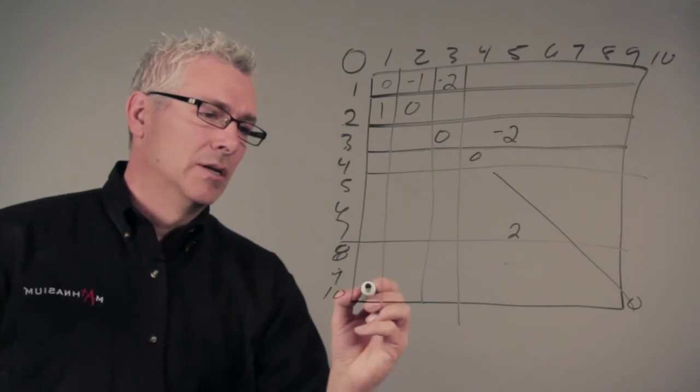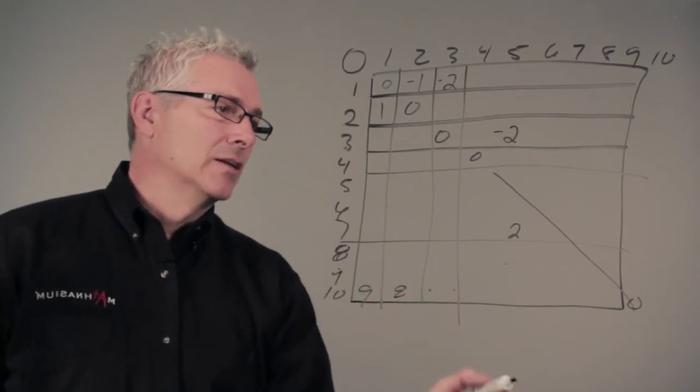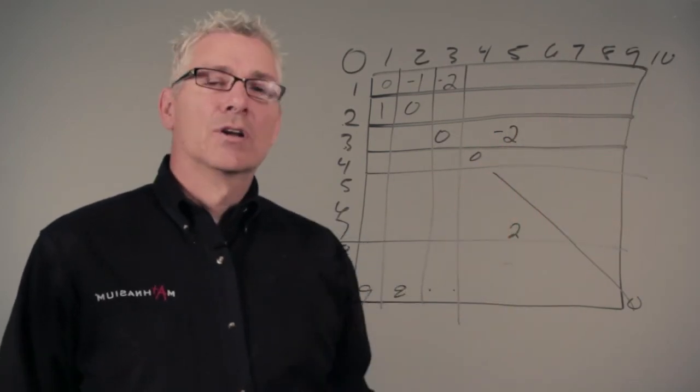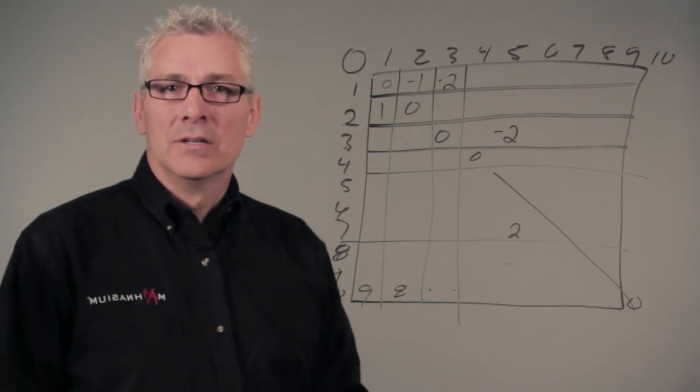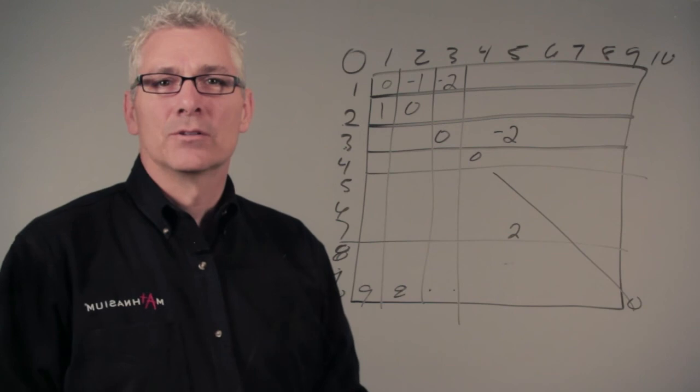So 10 minus 1 is 9, 10 minus 2 is 8, and so on down this way. So this half will be all pluses, this side will be all minuses, and that's how we're going to create a subtraction table. Thanks for watching. This has been Mark Minson with Mathnasium of Draper, Utah.